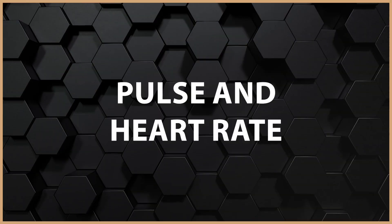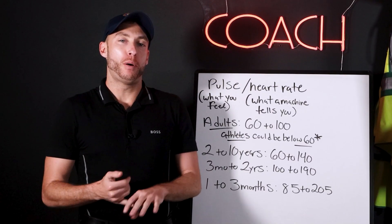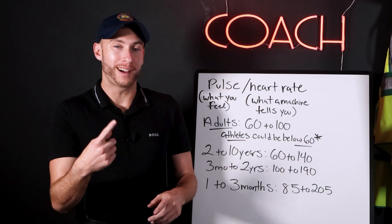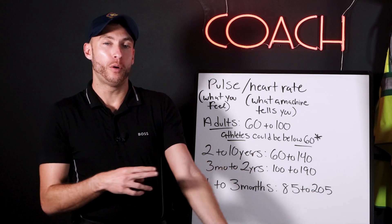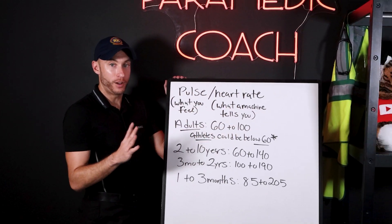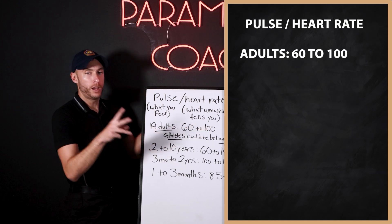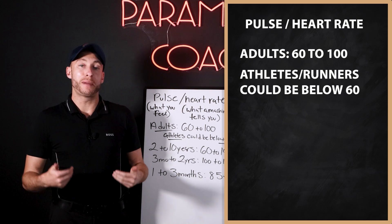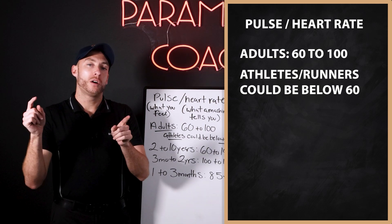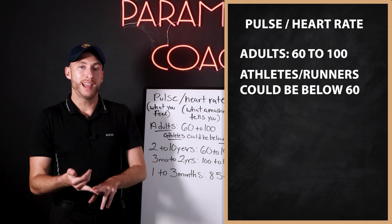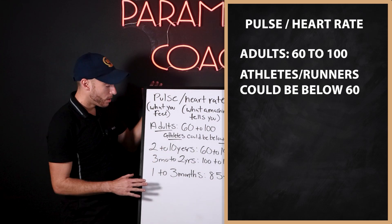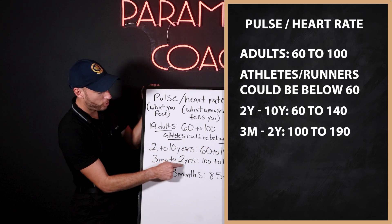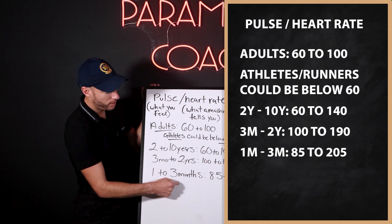You need to know the difference between pulse and heart rate. Pulse is what you feel; heart rate is what the monitor tells you. In adults, normal is 60–100. However, athletes may have a lower baseline, like the 40s or 50s — even high 30s is possible. Normal heart rate ranges by age: 2–10 years 60–140, 3 months–2 years 100–190, 1–3 months 85–205.